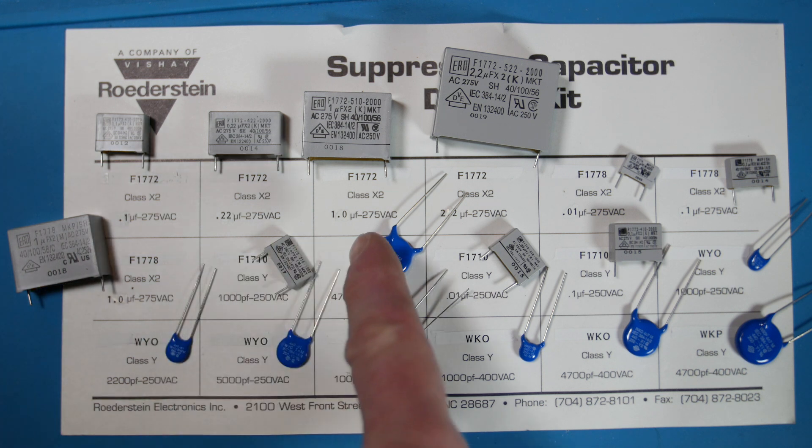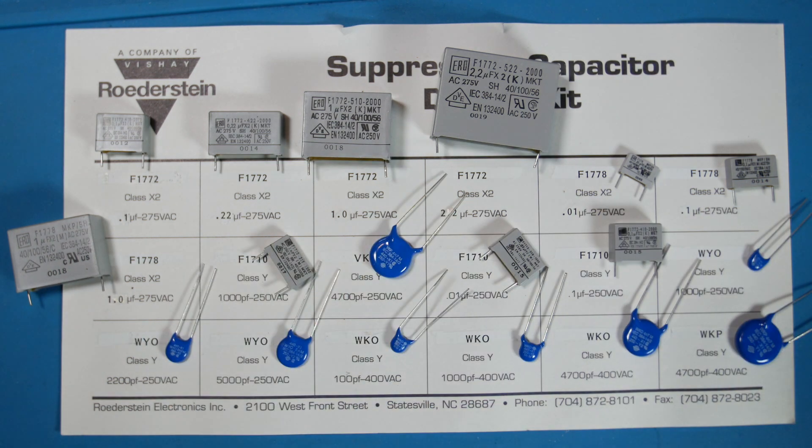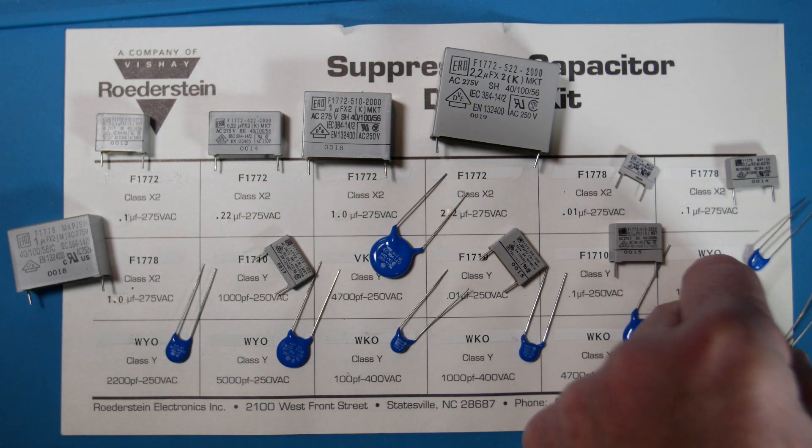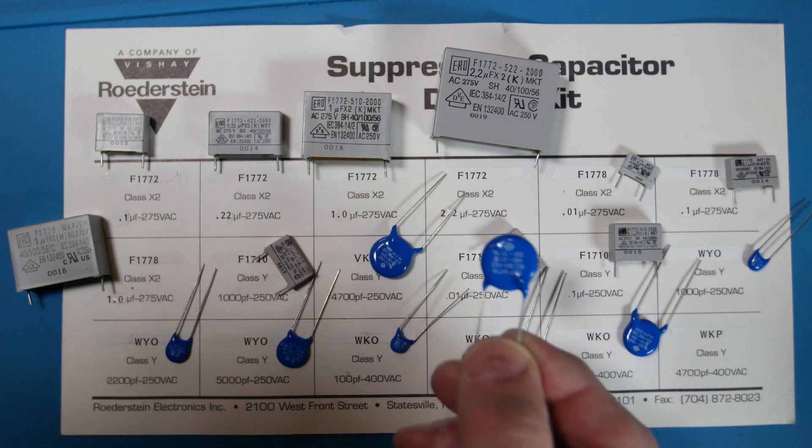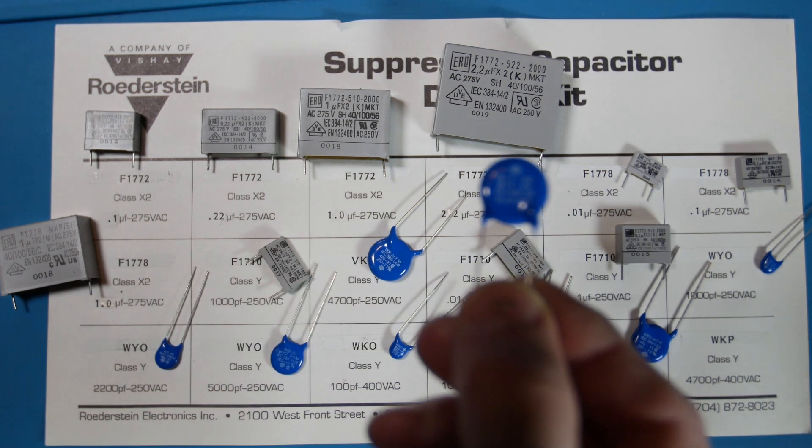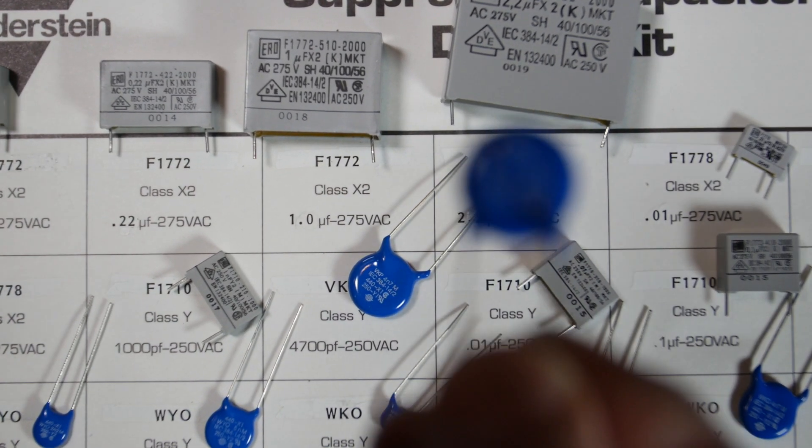And okay guys, I have a sample of each part in each bin right here. You can see, these are the Y1s. They don't say, but these are Y2s up here. And then the X1s. They actually say X2.